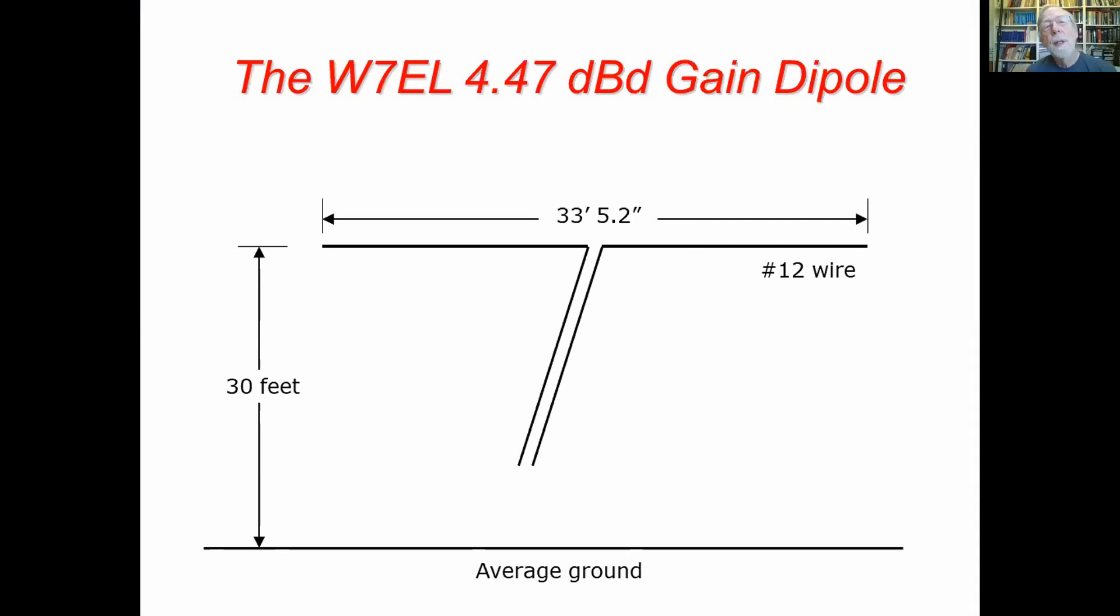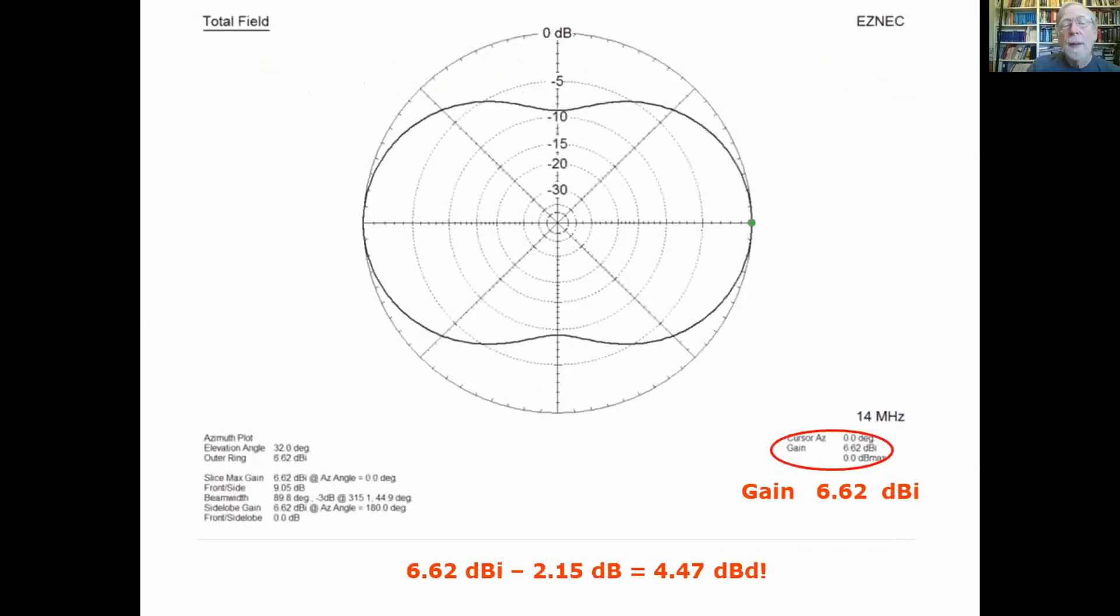Here is a W7EL 4.47 dBd gain dipole, so how did we do that? This is a model of it. Of course models are never wrong, right? Yes they are, but it isn't here - this is actually accurate. We've got a gain here shown at an elevation angle of 32 degrees. We have a gain of 6.62 dBi. You subtract off the 2.15 and you've got a gain of 4.47 dBd. Now how did I do that? I found antenna manufacturers advertising their antenna gains in this manner and so they come up with some really attractive, exciting gains for their antennas.